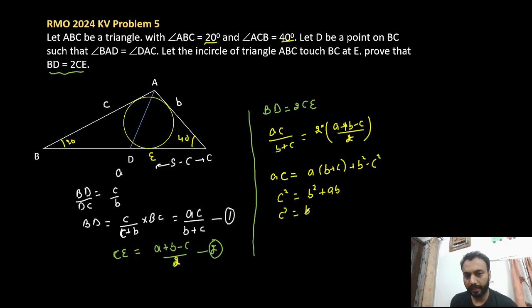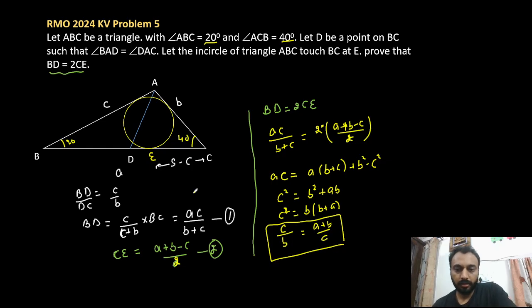And if we try to write in terms of ratio so that we can use similar triangles to create this ratio, so I can say c by b is a plus b by c. So to prove BD equals 2CE, it is equivalent to prove c by b equals a plus b by c.